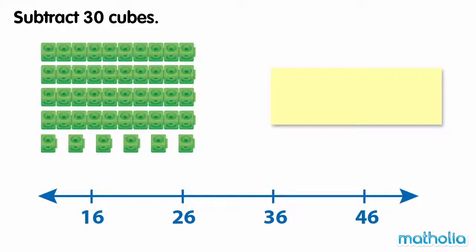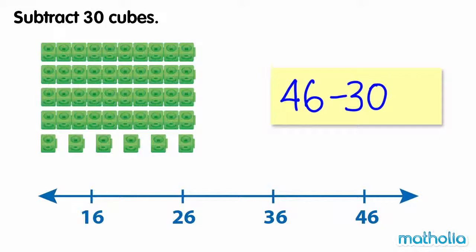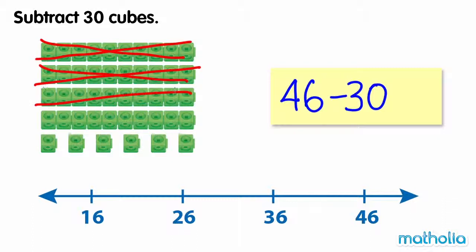Subtract 30 cubes. There are 46 cubes, so we need to find 46 minus 30. Let's cross off 30 cubes and count the cubes remaining: 10, 20, 30. There are 16 cubes remaining, so 46 minus 30 equals 16.